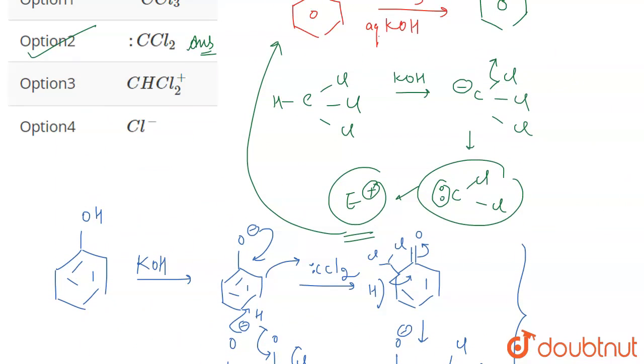So we don't need to go into the mechanism. We just need to know the electrophile that is used in this reaction which is CCl2, option 2 is the correct answer. That's all for the question.